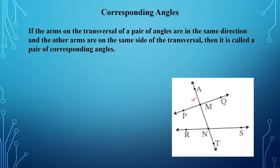For example, angle AMP and angle MNR — if you see these two angles, they are in the same direction. One arm on the transversal is in the same direction, and the other arms — MP direction and NR direction — are on the same side of the transversal. So such angles are called corresponding angles.